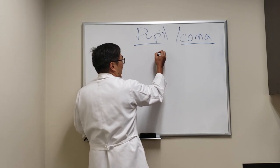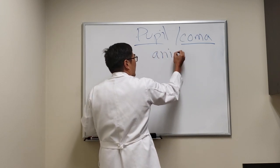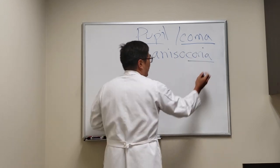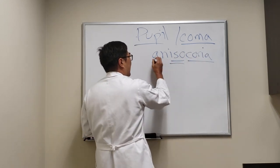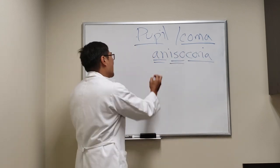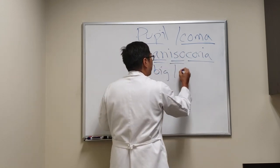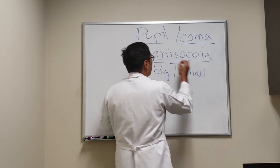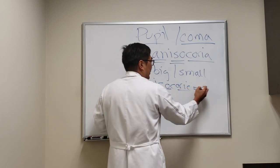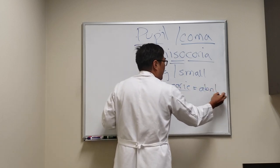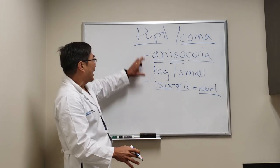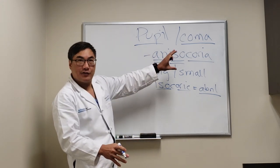We really have two types of pupil problems. The first is when the pupil is a different size — 'choria' is our pupil word. 'Iso' means same and 'an' means not, so anisocoria means not the same size pupil: one big and one small. The other type is when we have isochoric pupils — they're the same size but still abnormal. So pupils can be abnormal and isochoric, or abnormal and anisochoric.